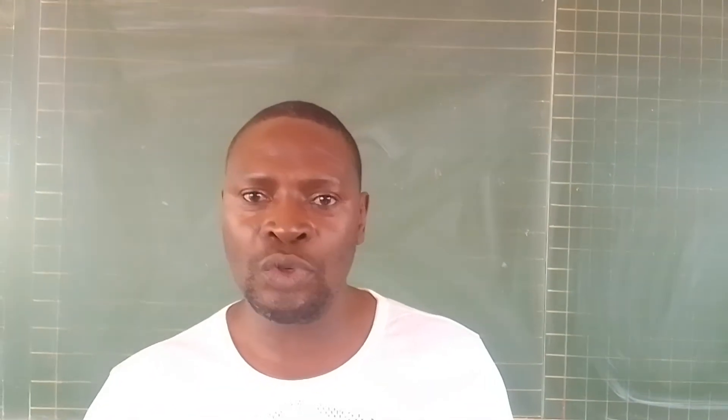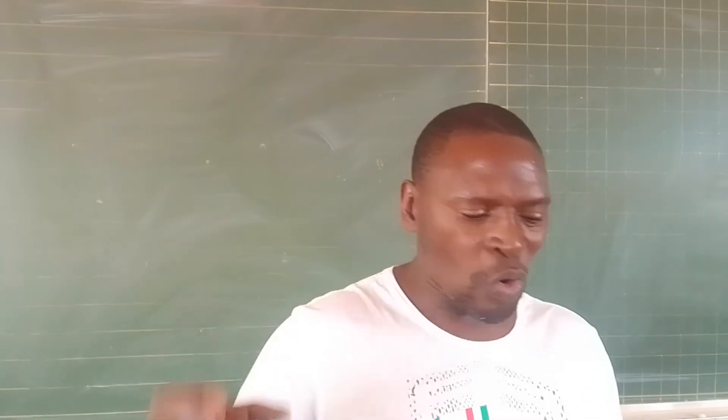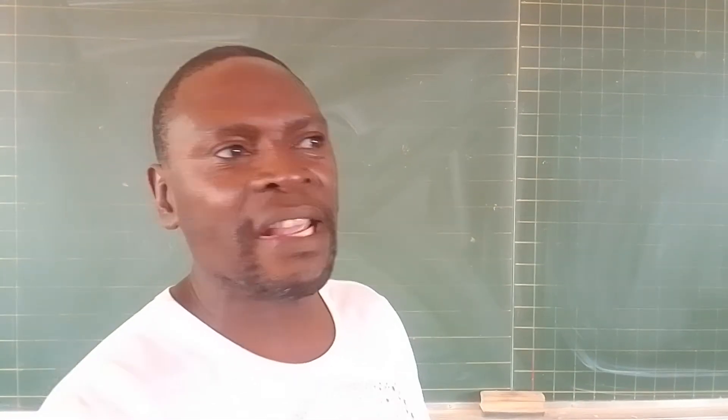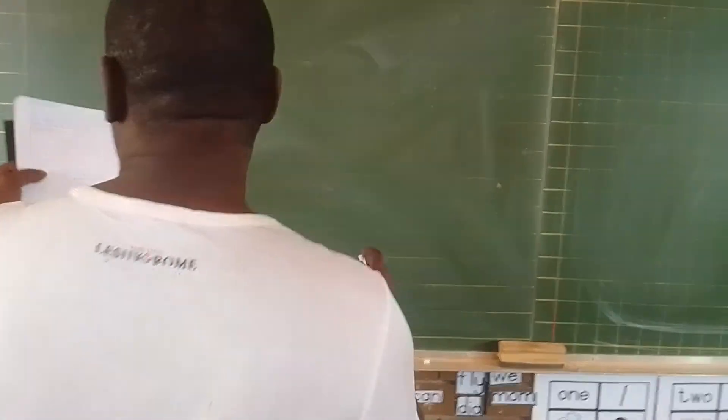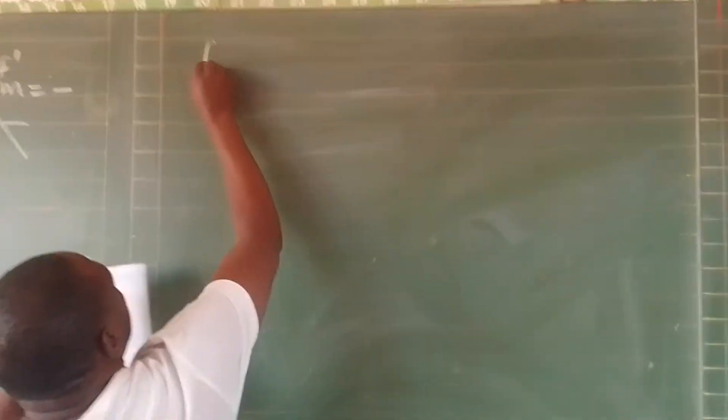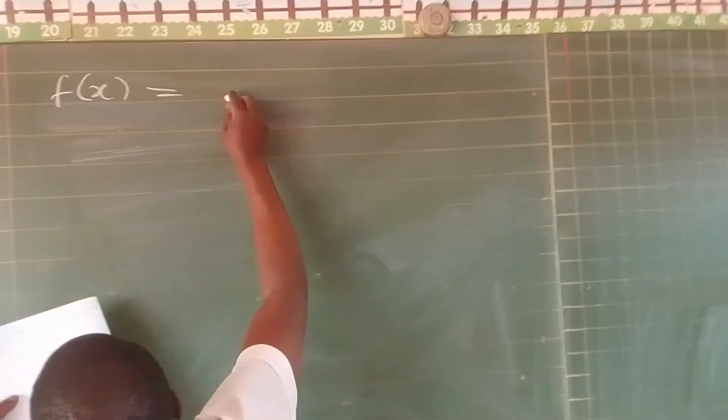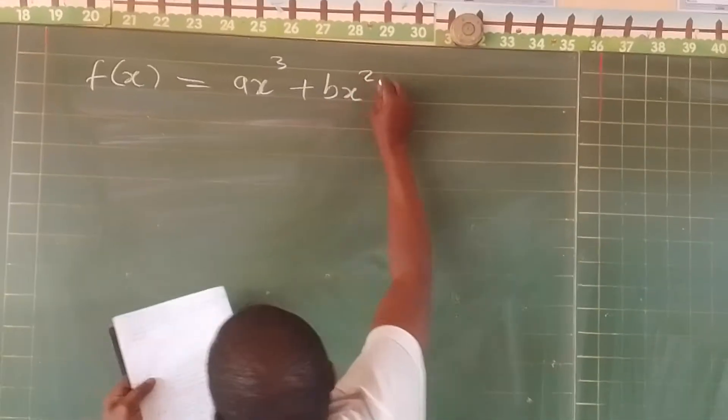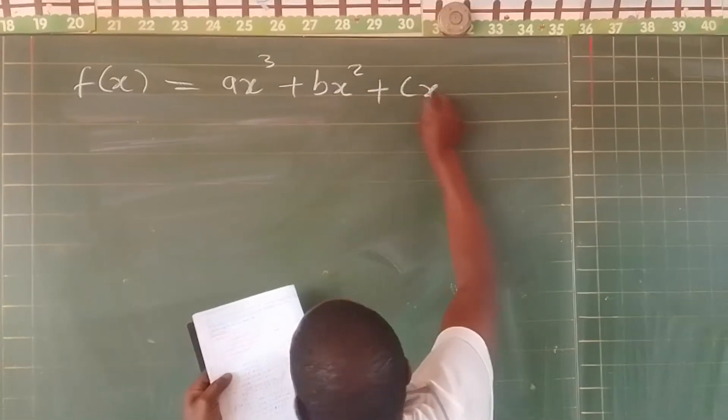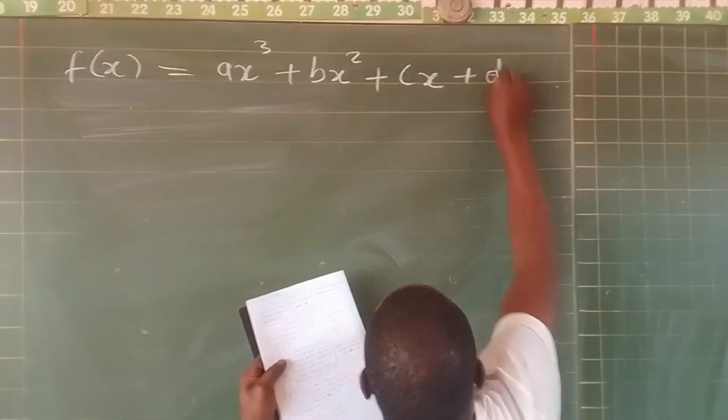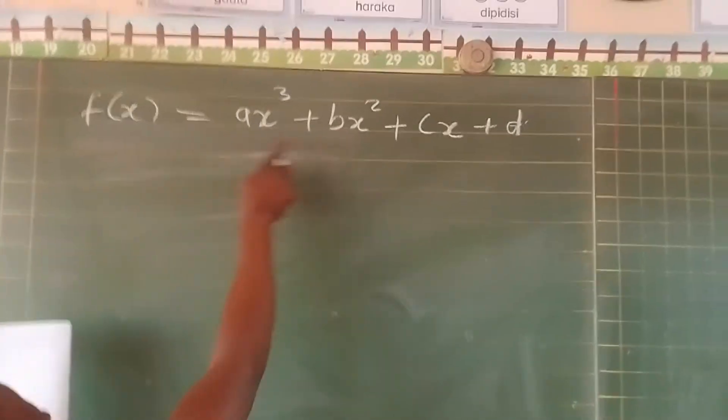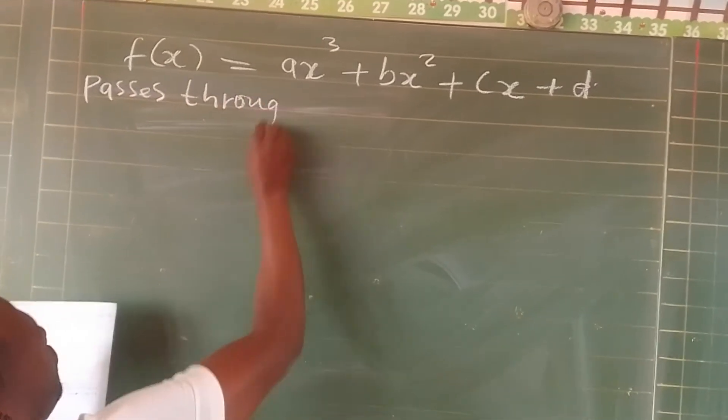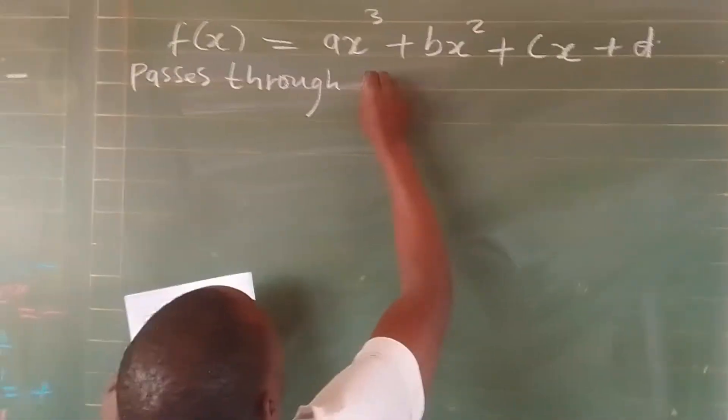The problem here I'm going to illustrate is you are required to find the values of A, B, and C, provided that they have given you f(x) equals Ax³ plus Bx² plus Cx plus D. They say this passes through the points: